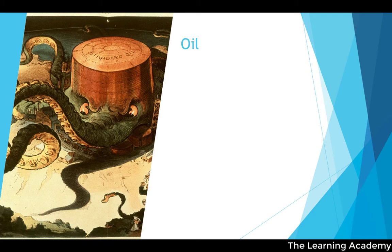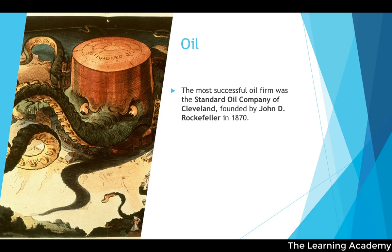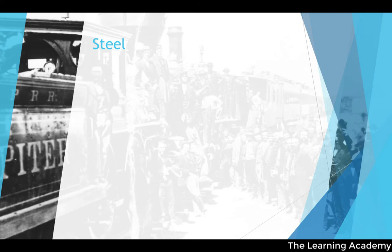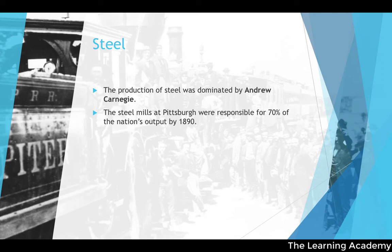The Standard Oil Company of Cleveland, founded by John D. Rockefeller in 1870, was the most successful oil firm. It embraced modern technologies and ruthless business practices, and by 1879 controlled 97% of the US oil industry — effectively a monopoly. Steel was dominated by Andrew Carnegie; his Pittsburgh steel mills were responsible for 70% of the nation's output by the 1890s, much of which went into producing more railroads.